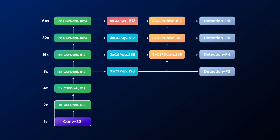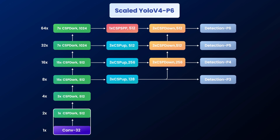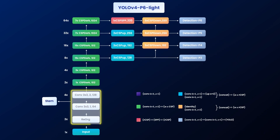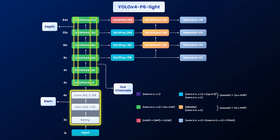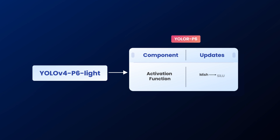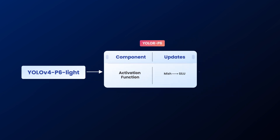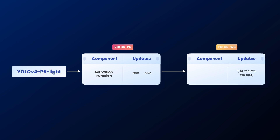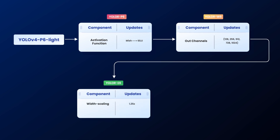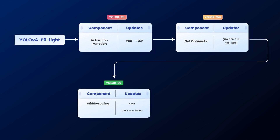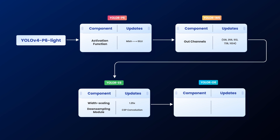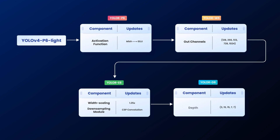YOLO-R models are built upon the Scaled YOLO-V4 P6 architecture. First, a YOLO-V4 P6 light version is constructed by changing the stem, the depth, and the output channels. Then, by changing the activation function on the light model to SiLU, we get YOLO-R P6. YOLO-R W6 is built by increasing the output channels on P6, and YOLO-R E6 further scales the channels in W6, also using the CSP convolution downsampling module. Finally, YOLO-R D6 is a collective model of all the above changes, with increased depth backbone stages.